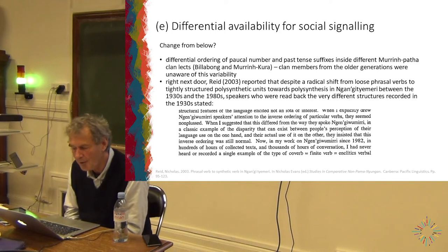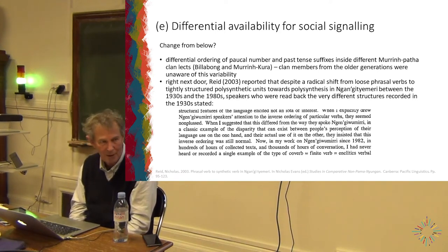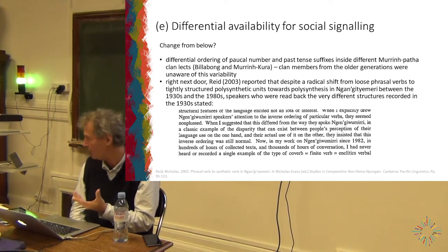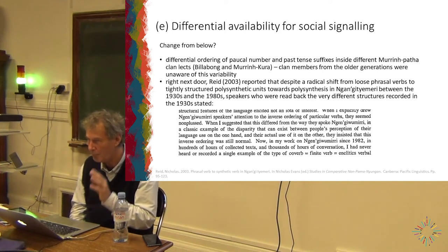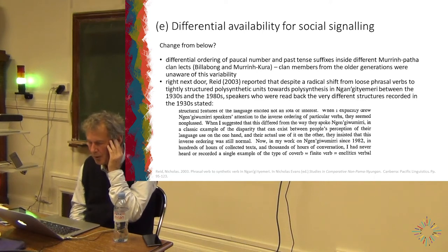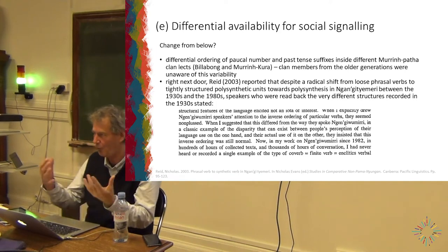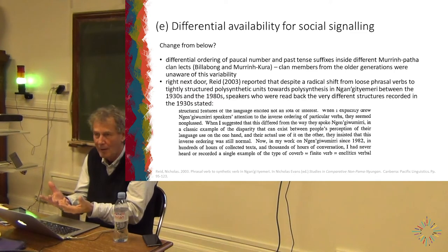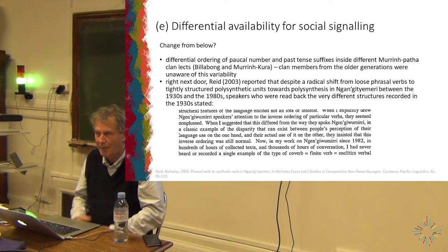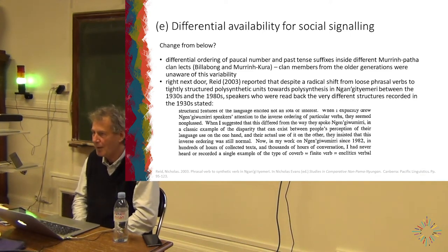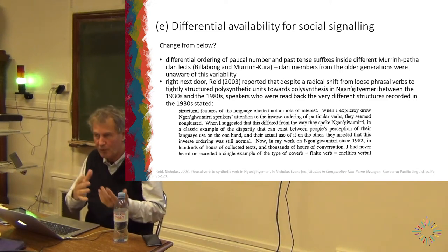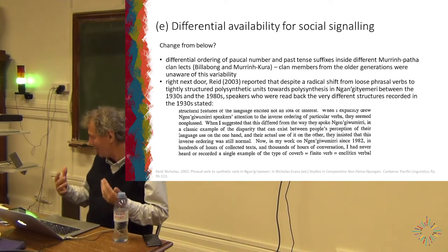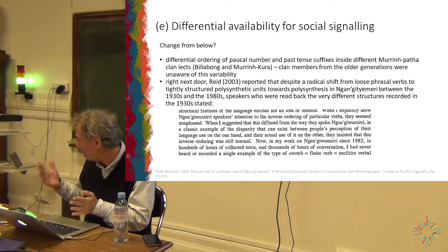Right next door, Nick Reid, who worked on Ngan'gityemerri, found an even more spectacular case. When he worked on the language in the 1980s it was a thoroughgoing polysynthetic language. Later he found recordings and transcriptions from the 1930s, and those weren't polysynthetic — there were three big hunks of verb which hadn't yet melded together. When he read these back to speakers and said 'did you used to speak like this?', they said 'yes, that's how we speak.' People had shifted from one type of grammar to a rather different one without anyone ever noticing. This is an example of how not every type of variation gets invested with social meaning.